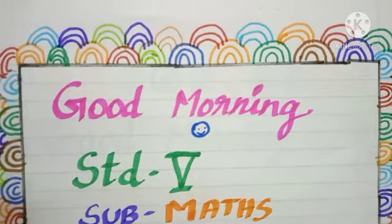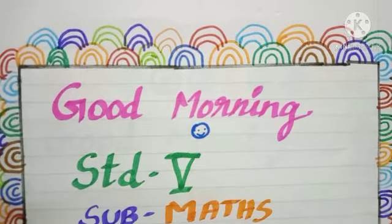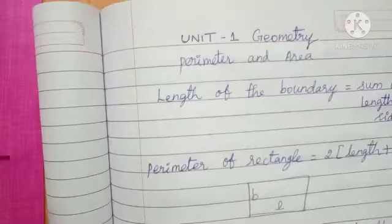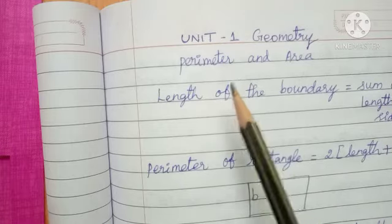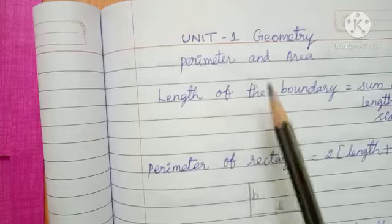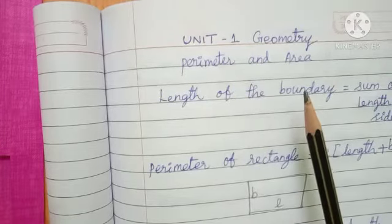Good morning children. Today we start the class for standard maths, Term 3. We will once again revise the previous class. Unit 1: Geometry — perimeter and area.